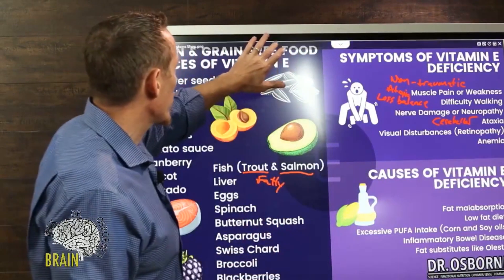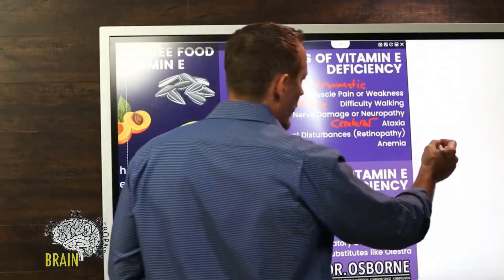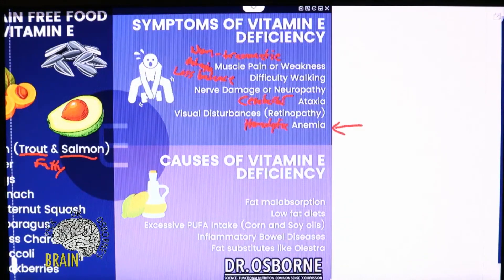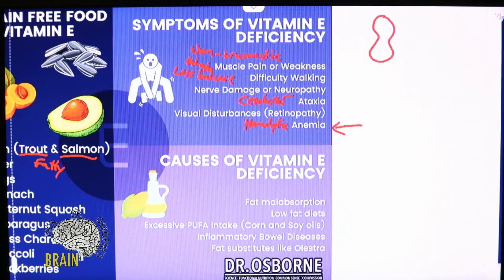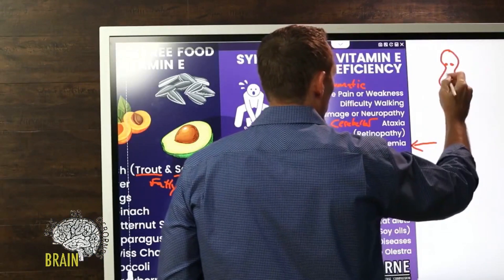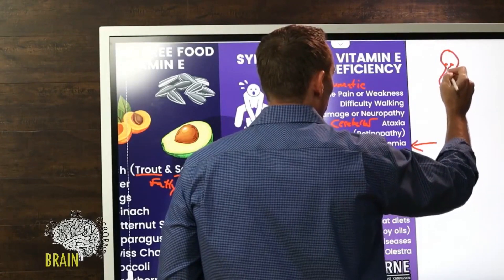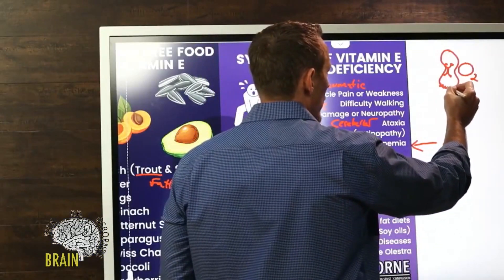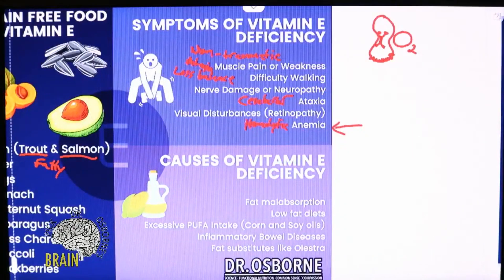Additionally, anemia — specifically hemolytic anemia — can be a symptom. This isn't iron deficiency anemia. With hemolytic anemia, the red blood cell wall is easily damaged. Red blood cells are like a little disc with a concavity that carries oxygen via hemoglobin. In hemolytic anemia, these cells tend to split or rupture too quickly, which is what defines this type of anemia.